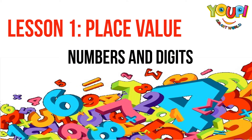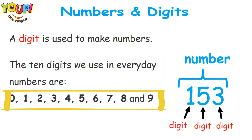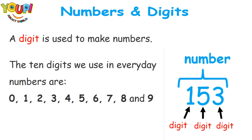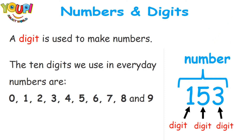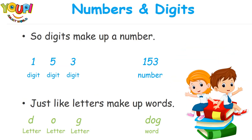Hello everyone! Today's lesson is place value: numbers and digits. A digit is used to make numbers. The 10 digits we use in everyday numbers are 0, 1, 2, 3, 4, 5, 6, 7, 8, and 9. These are the digits we usually use to make numbers. Look at this example: 153. We have three digits in this number — digit 1, digit 5, and digit 3 — and all of these digits make the number 153.